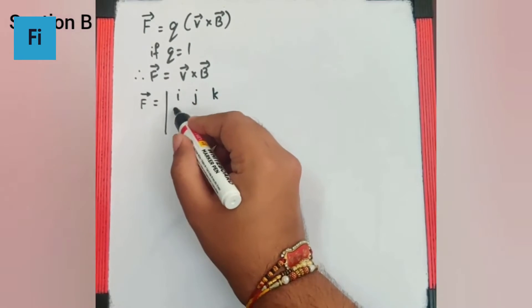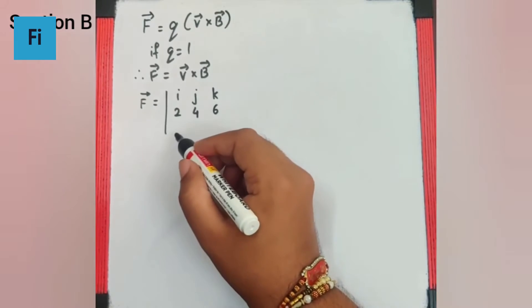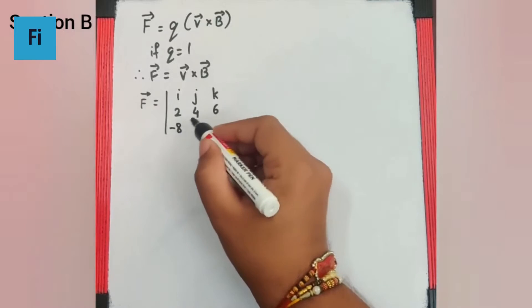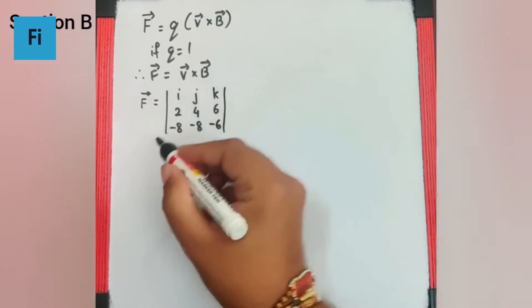...and B bar in the first option is minus 8i cap minus 8j cap and minus 6k cap. So let's see what we get.